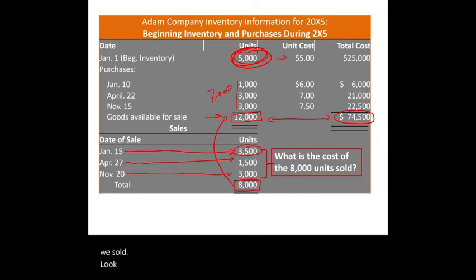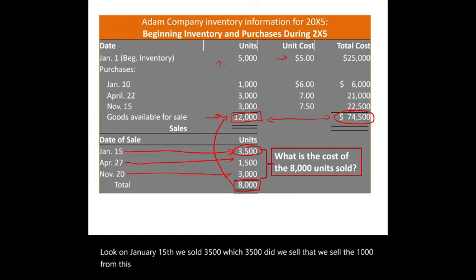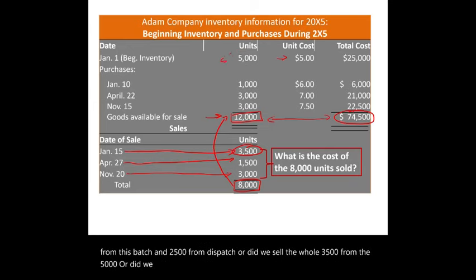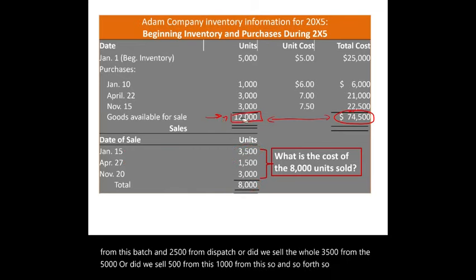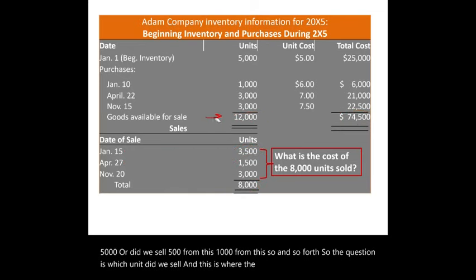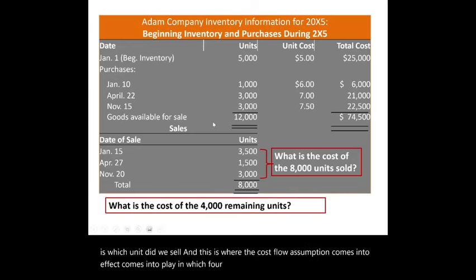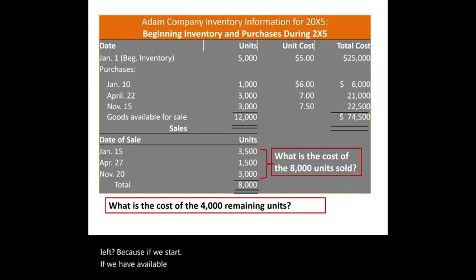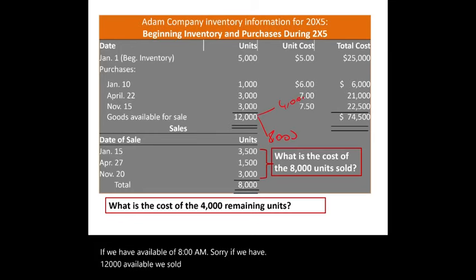The question is: which 8,000 units were sold? On January 15th we sold 3,500 — did we sell 1,000 from one batch and 2,500 from another, or all 3,500 from the 5,000 beginning inventory? This is where the cost flow assumption comes into effect. If we have 12,000 available and sold 8,000, we must have 4,000 remaining.